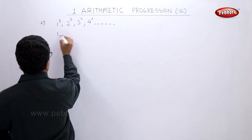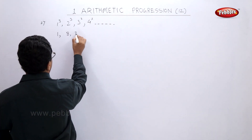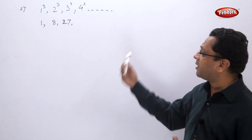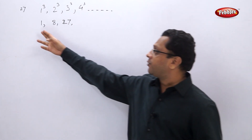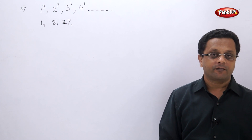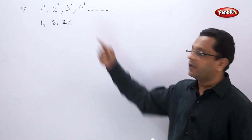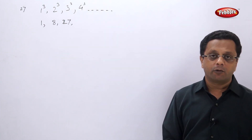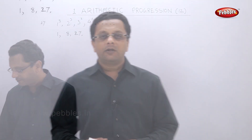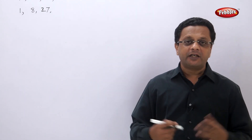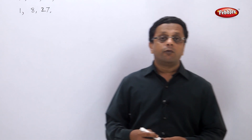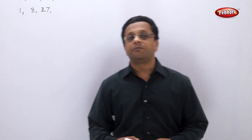The actual terms are: first term = 1, second term = 8, third term = 27. You need not find the fourth term at all, because the difference between the first two terms is 7 and the difference between the second and third is 19. Since the differences are not the same, they are not in arithmetic progression. These are simple examples based on arithmetic progression.